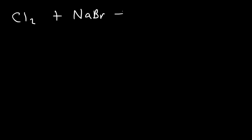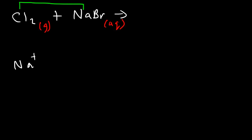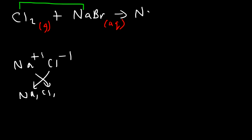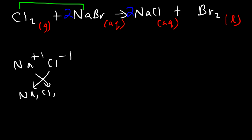If chlorine gas reacts with an aqueous solution of sodium bromide, chlorine — the non-metal — pairs up with sodium and displaces the other halogen, bromine, out of the solution. Chlorine and sodium combine in a one-to-one ratio producing NaCl, and bromine is displaced as diatomic bromine, which is a liquid at room temperature. To balance, put a two in front of NaBr and NaCl.